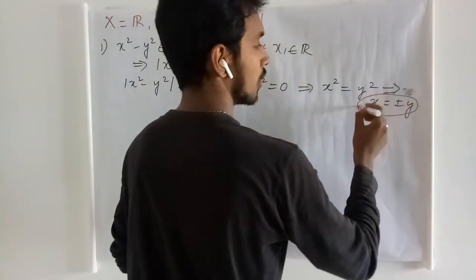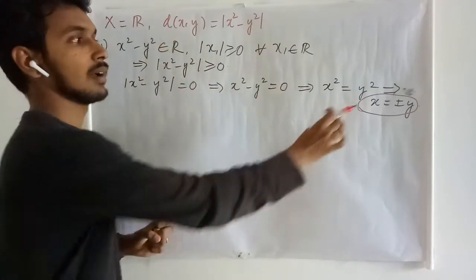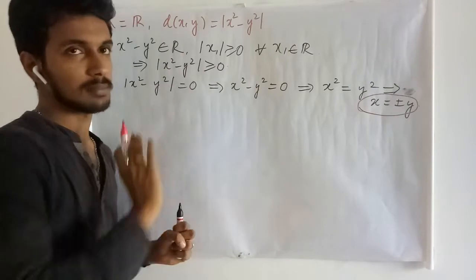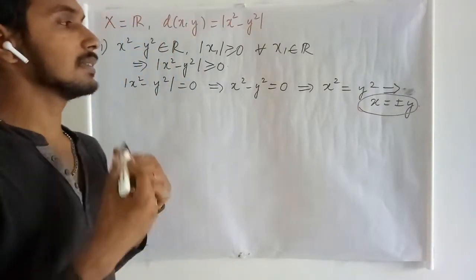Here comes the trouble for us. If we are asked to check whether this is a metric or not, at this moment itself we can stop and see that this is not a metric. Let us go further and see whether it satisfies other conditions or not.